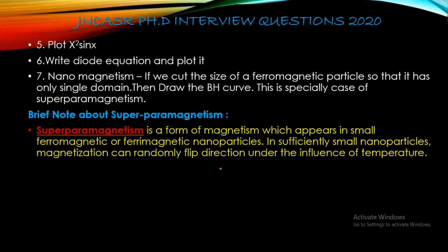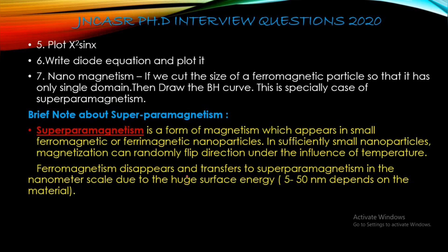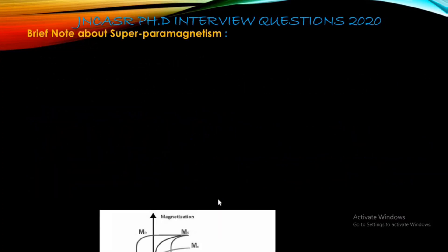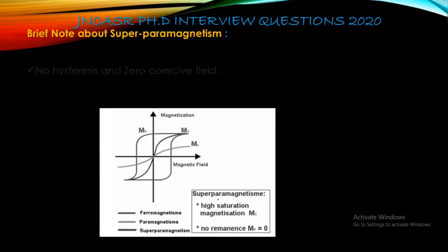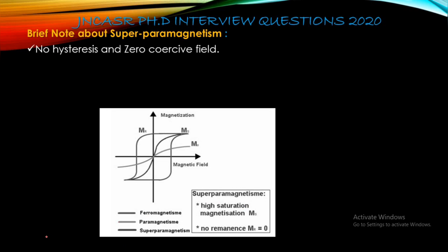In sufficiently small nanoparticles, magnetization can randomly flip direction under the influence of temperature. Ferromagnetism disappears and transfers to superparamagnetism at the nanometer scale due to huge surface energy. As you reduce the nano dimension, its surface-to-volume ratio will increase. This phenomenon happens around 5 to 15 nanometers depending on the material.